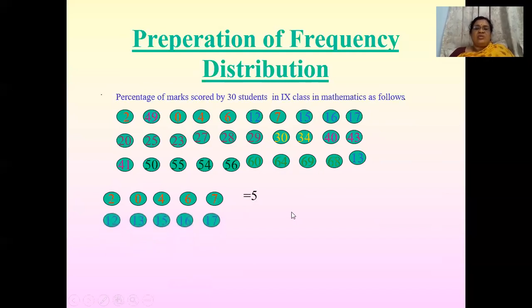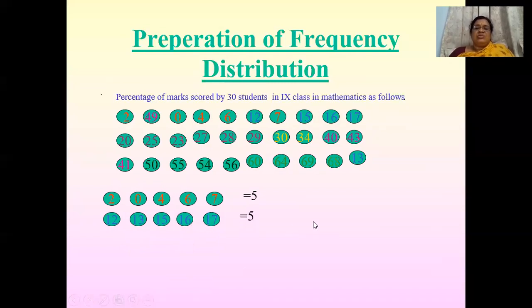Now 10 to 19: there are 5 students again — with marks 12, 13, 15, 16, and 17. We categorize like this, so 5 students.